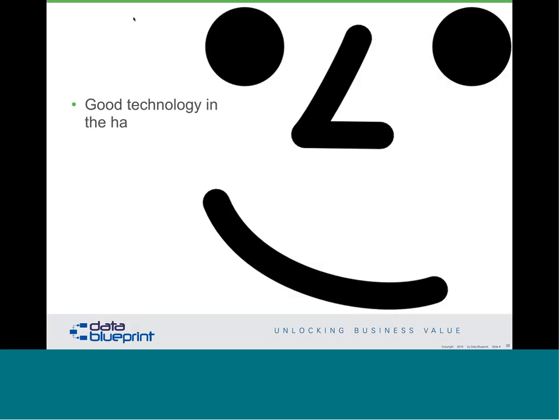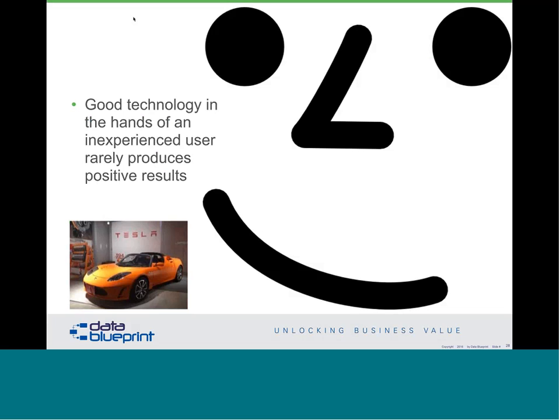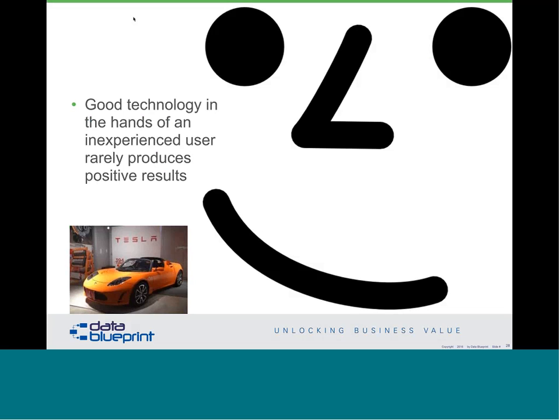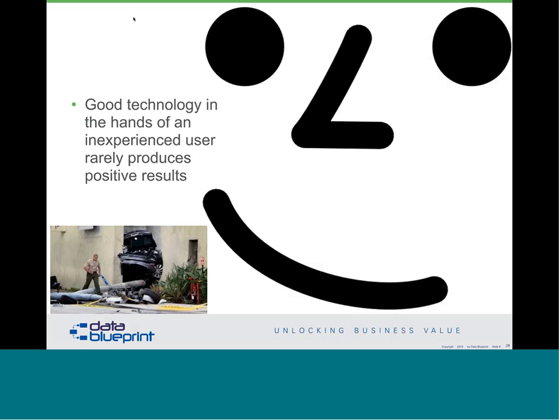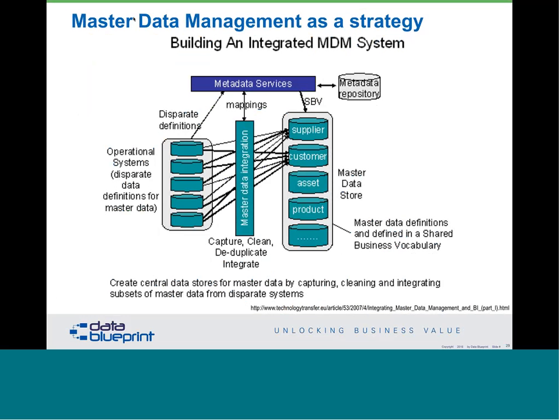One of my favorite sayings is: 'a good technology in the hands of an inexperienced user rarely produces positive results.' It's somewhat like handing a key to a Tesla. They are phenomenal pieces of engineering, but they can end up with some very poor results — that is actually a Tesla stuck between two buildings. In many cases, organizations go out and purchase technologies without understanding their readiness to use them.